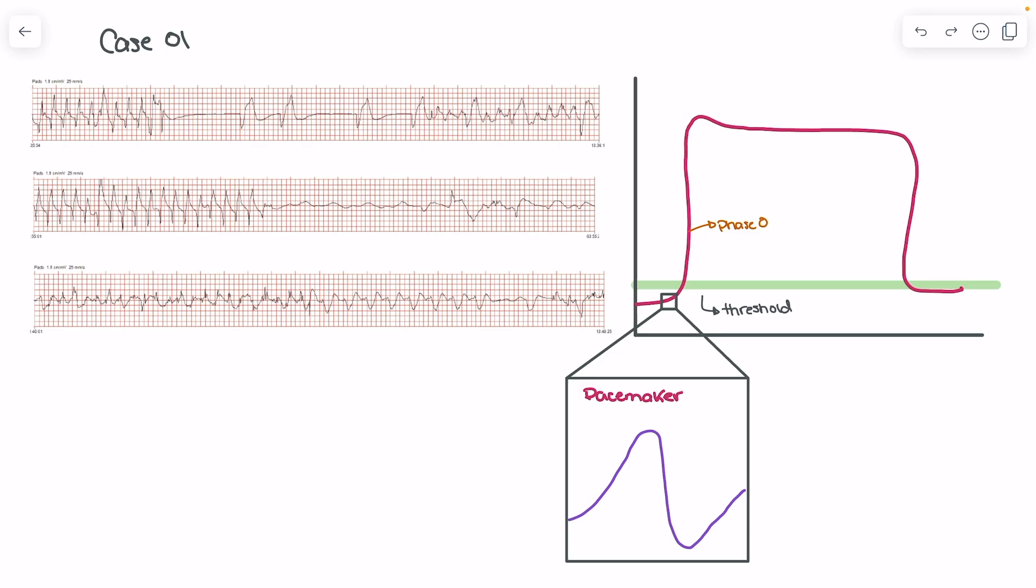When we look at rhythm interpretations one and two, so we have rhythm interpretation number one here and number two here, what we find is that we have a slow wide rhythm. So in rhythm interpretation number one here, the rhythm is quite slow and we have a wide complex QRS. And in rhythm interpretation number two, we have actually a much more characteristic sine wave.